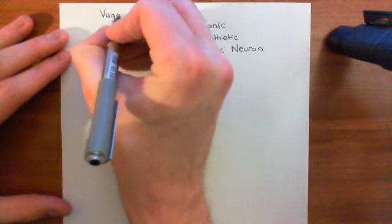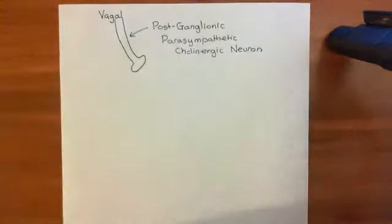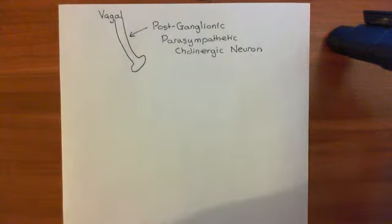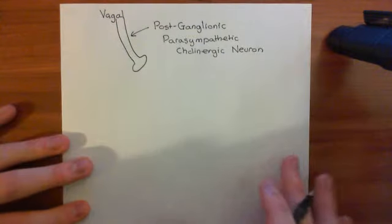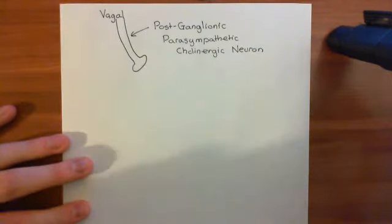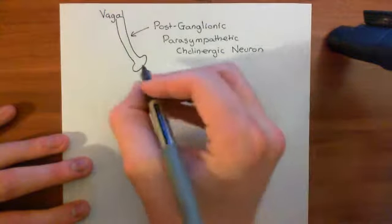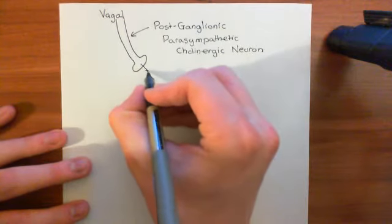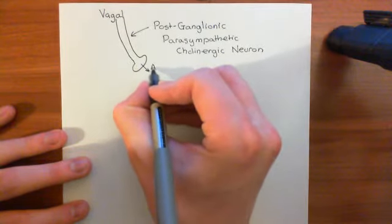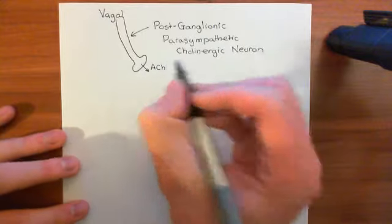Now of course you have two vagal nerves - you have a right vagus nerve and a left vagus nerve. Both of them will be supplying fibers into the stomach. So in comes the post-ganglionic parasympathetic cholinergic neuron, and basically it's going to be secreting acetylcholine. So out comes acetylcholine.